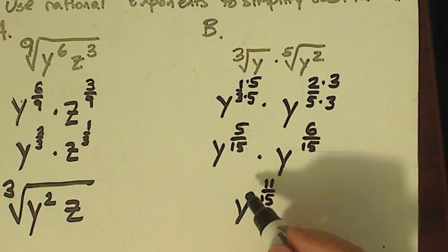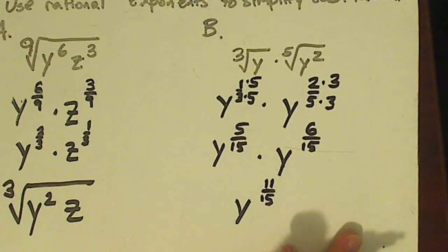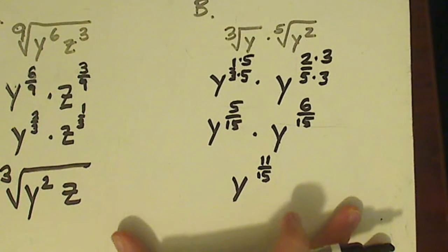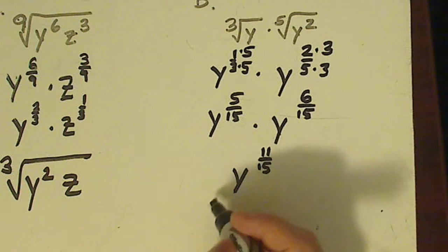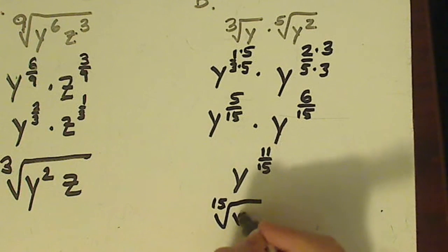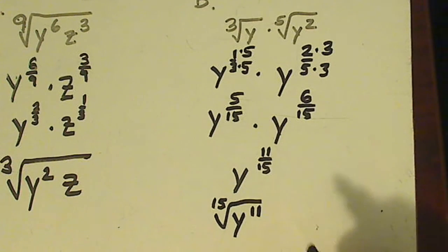You would simplify this if possible, but here you can't. But you need to write it as a single radical. So fifteen is the root. So it would be the fifteenth root of y raised to the eleventh.